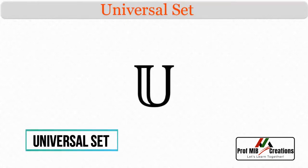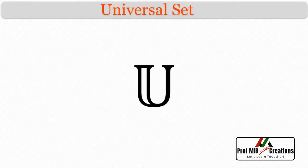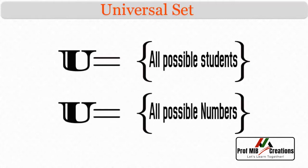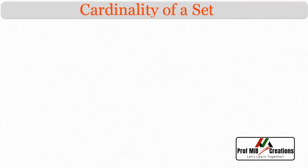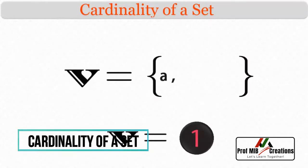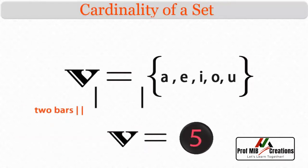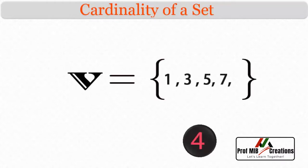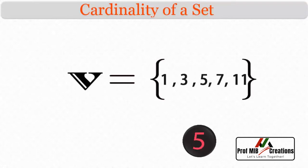Third, universal set. A universal set, denoted by U, contains all the elements under consideration. The universal set varies depending upon which objects are of interest. For example, if we have a student set under consideration, then the universal set represents all possible students. Similarly, if numbers are under consideration, then universal set U represents all possible numbers. Fourth, cardinality of a set. The number of elements in a set is called its cardinality and is denoted by two vertical bars. For example, let A be a set of some prime numbers — then its cardinality is 5, written as |A| = 5.